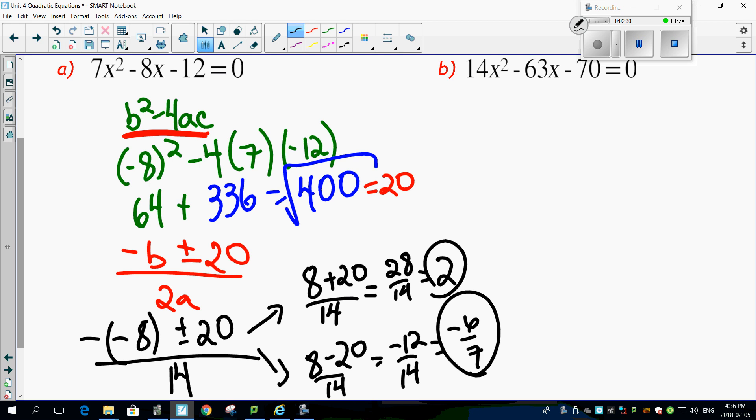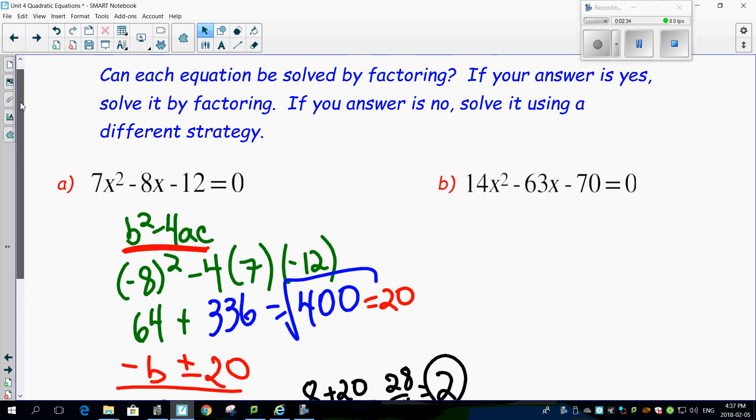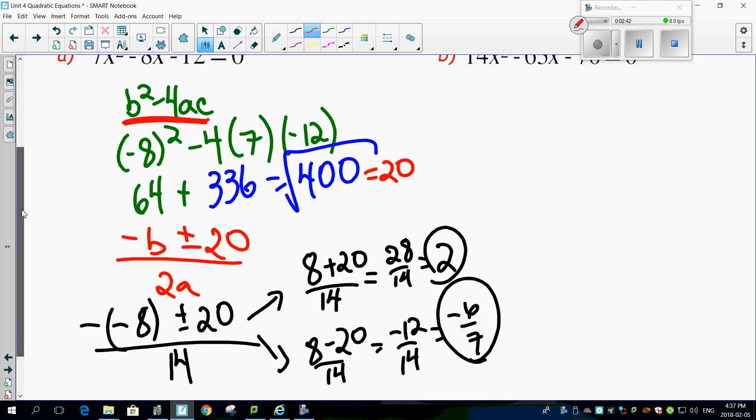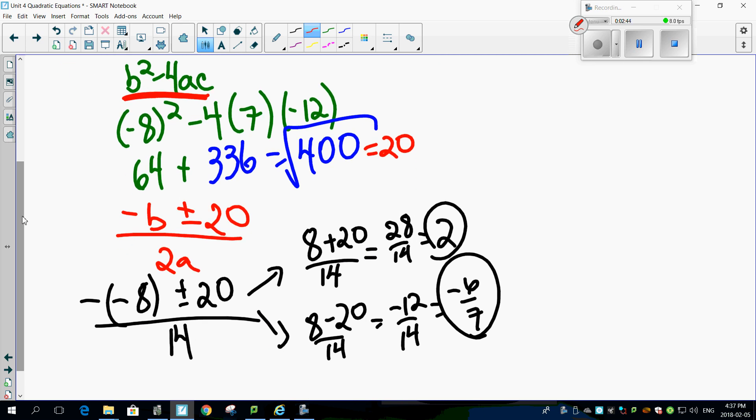Now, if I actually asked for the factoring of this, it says solve it. So, I gave the solution. But if I actually wanted the factors of this, I could go backwards from these two answers. And remember, this is x equals 2, and x equals negative 6 7ths, which means bring the 2 back.